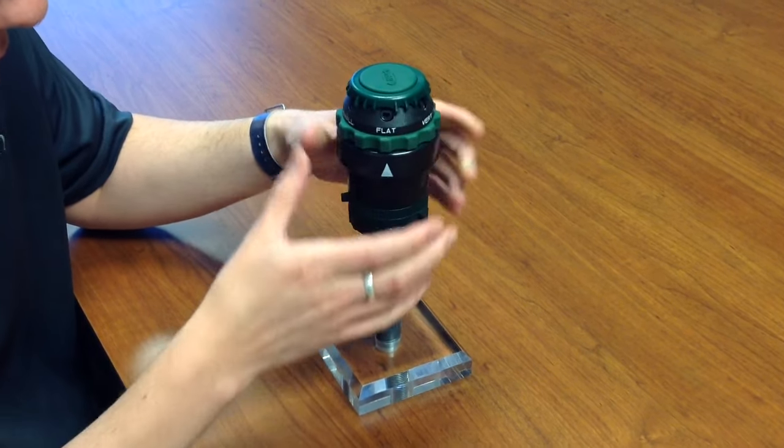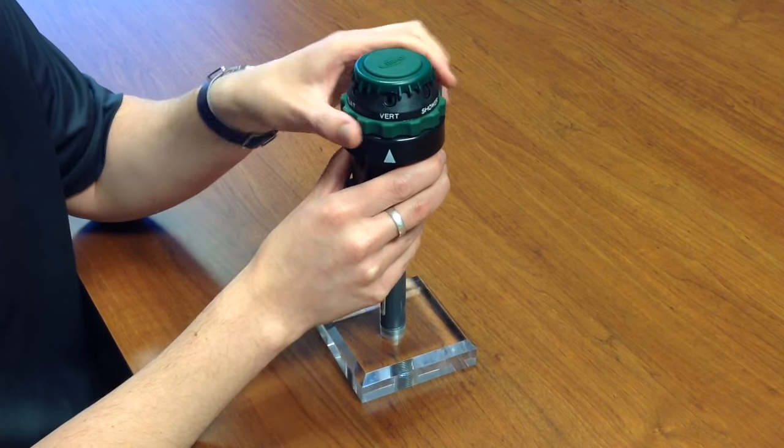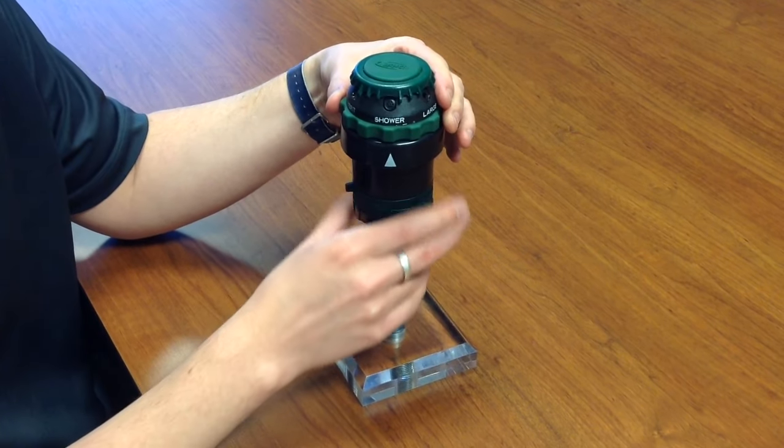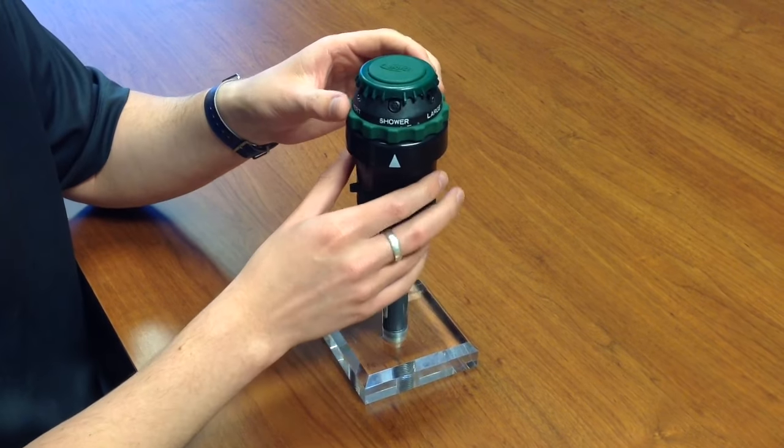You also have this flat horizontal fan, this vertical fan, and then you have a shower which is seven small streams of water. It's very light, so if you have delicate plants you may want to use that.